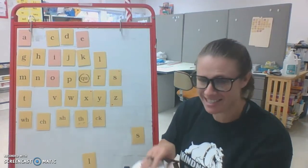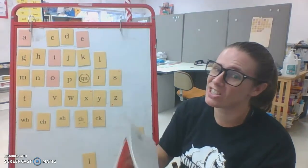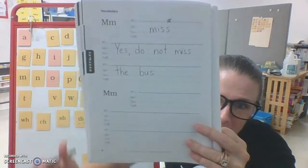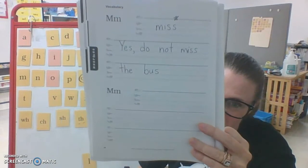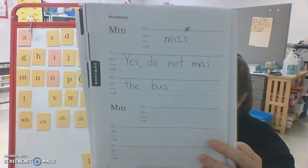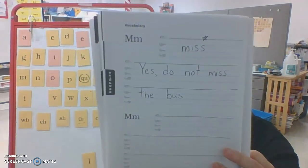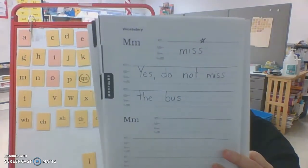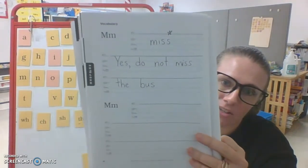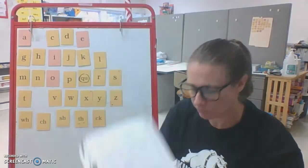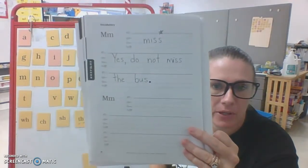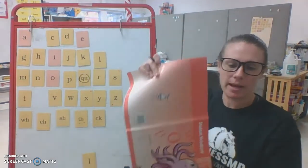Now the reason we're doing this sentence is because it's got the two words that are exceptions. Yes and bus are not doubled. But miss is doubled. So this sentence is going to help you remember that those are the exceptions. Yes, do not miss the bus. Pause here until you finish that entry. Okay, you may put these away.